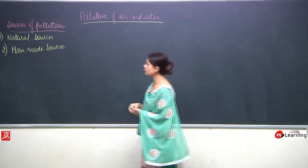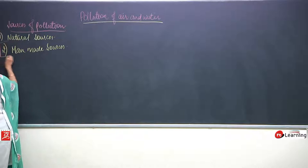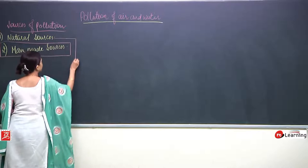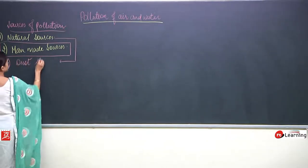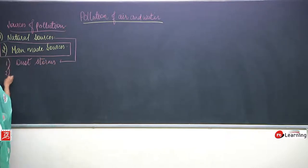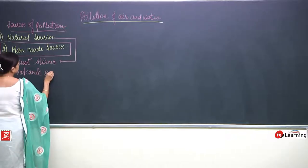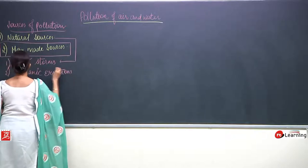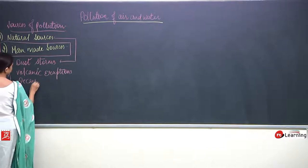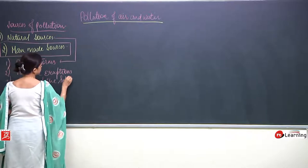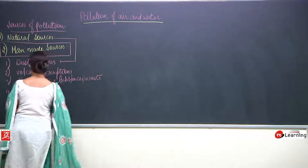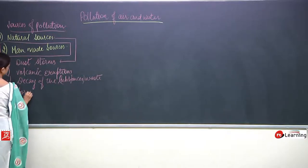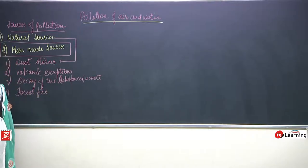First, we are going to discuss natural sources. I will make this as a column. The natural sources include: first, dust storms; second, volcanic eruption; third, decay of substances or decay of waste; and fourth, forest fire.